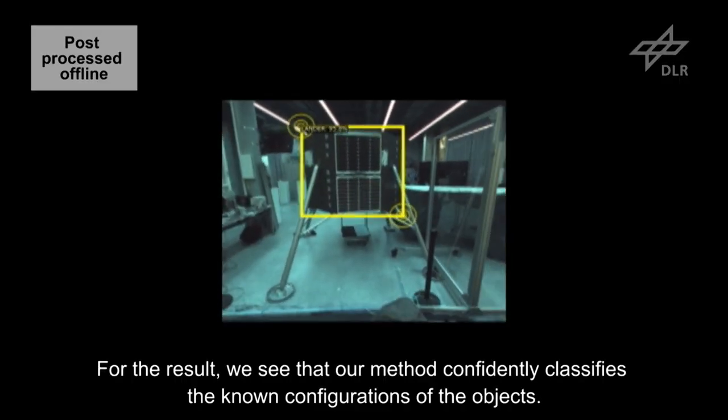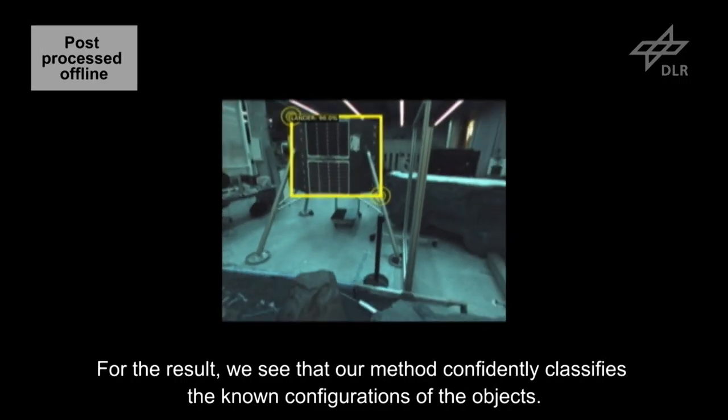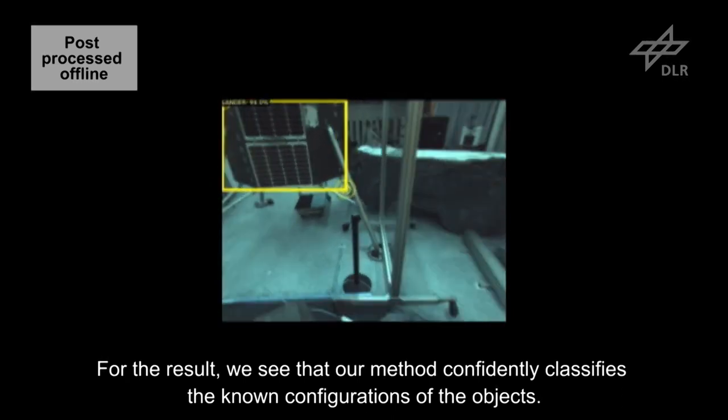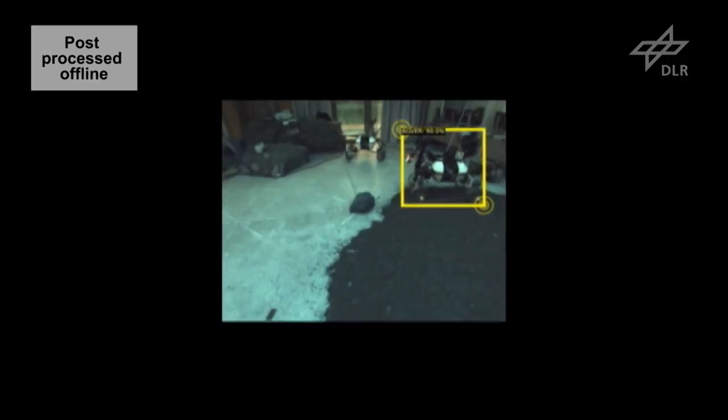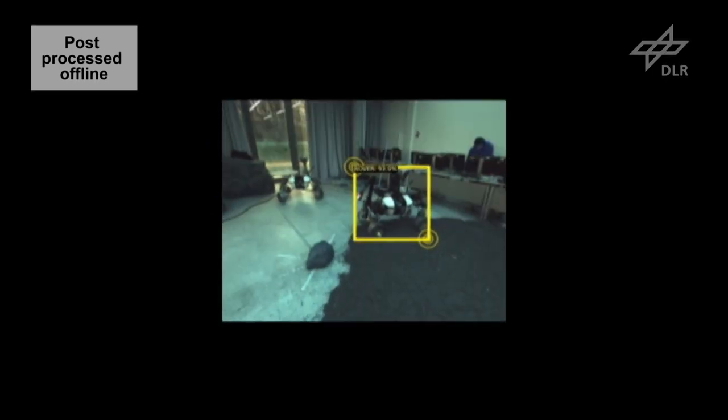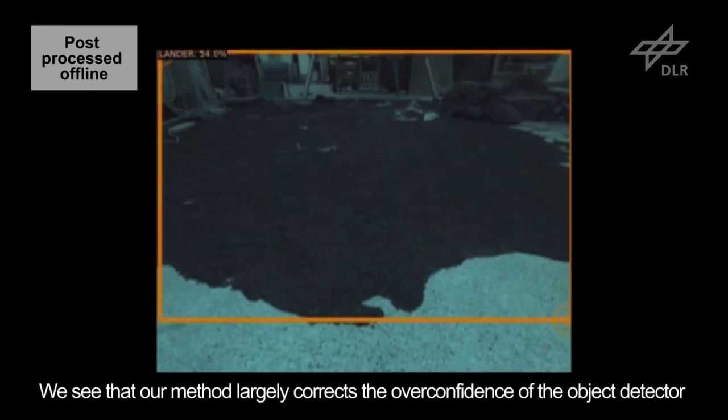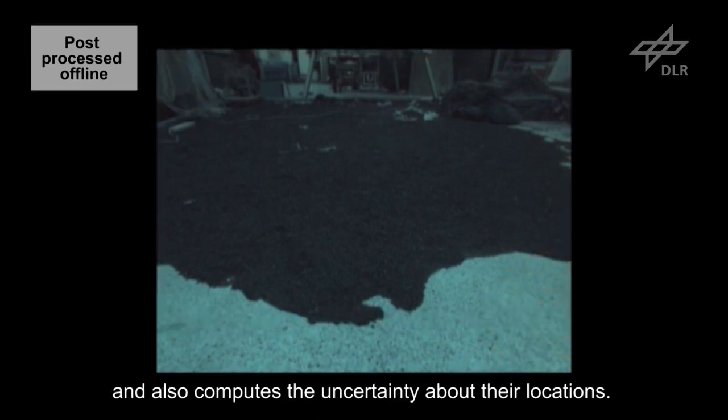For the results, we see that our method confidently classifies the known configurations of the objects. We see that our method largely corrects the overconfidence of the object detector and also computes the uncertainty about their locations.